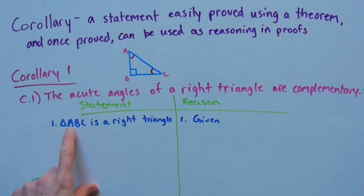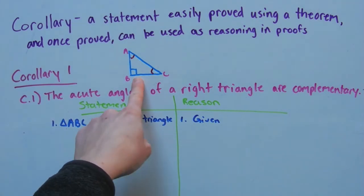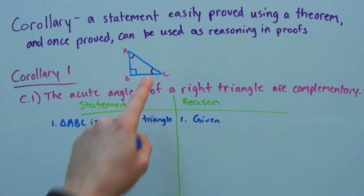So first, triangle ABC is a right triangle, and that's given to us. And we know that since ABC is a right triangle, then this angle B is a right angle.